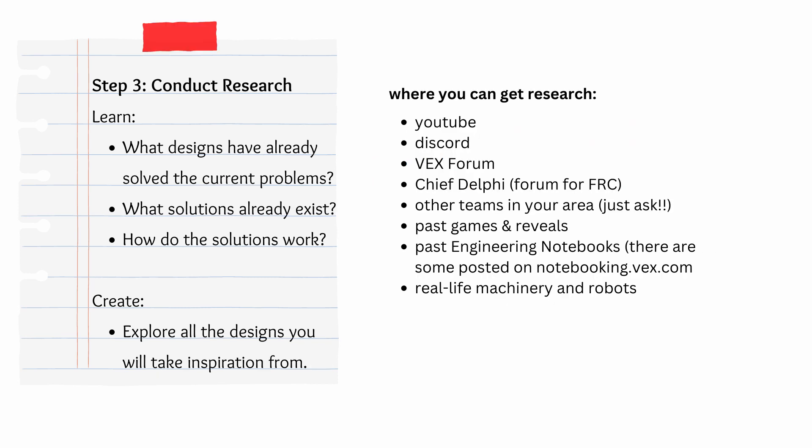The next step is about conducting research. What designs have already solved the problem that you are now trying to solve? Look up a ton of different designs, write a paragraph or two about what you like about that design, how it could be applicable to your strategy, and what you don't like about the design. You can get research from a bunch of different places — I have a bunch listed on the screen. One thing I'd like to note is the value of reaching out to other teams. Creating connections with other teams early in the season can be a great source of research for your team, and it'll help you know people from your local VEX community.